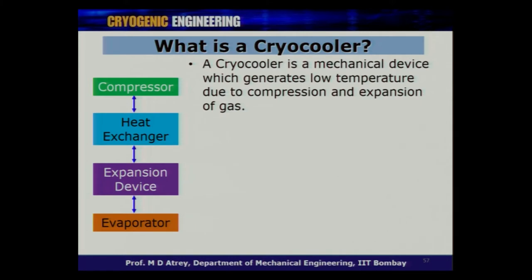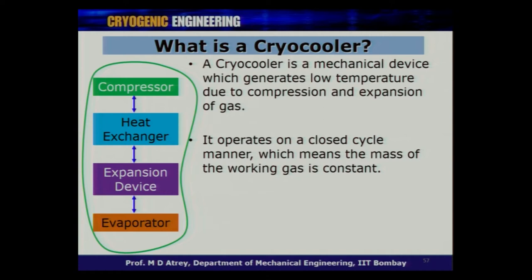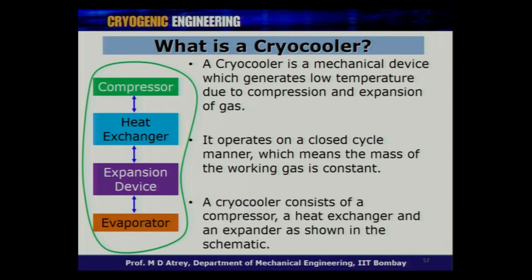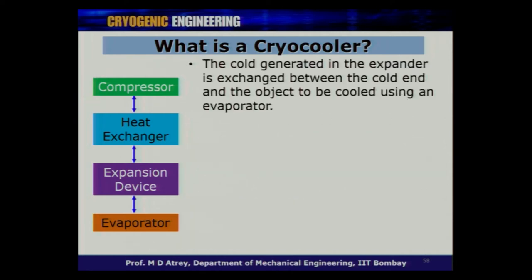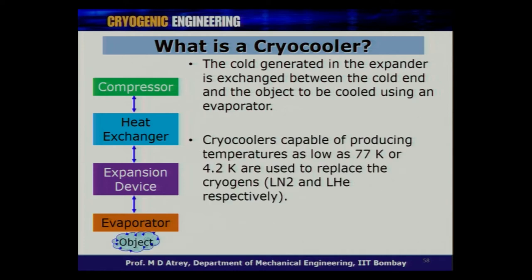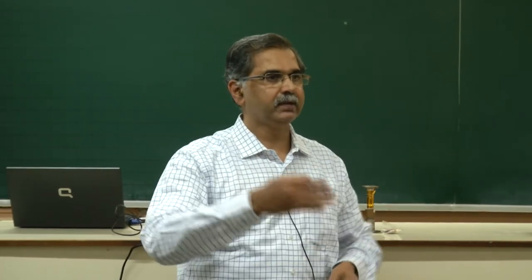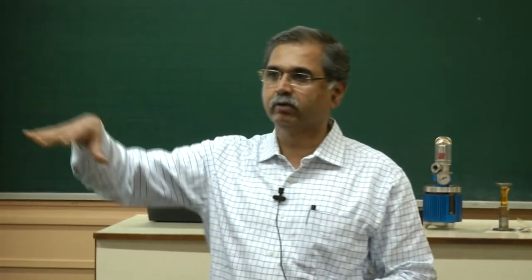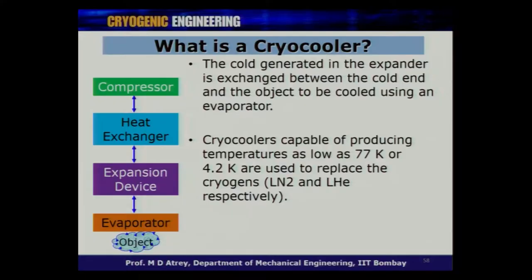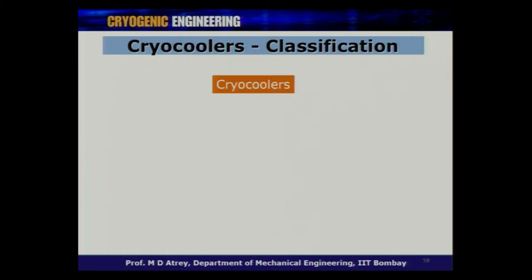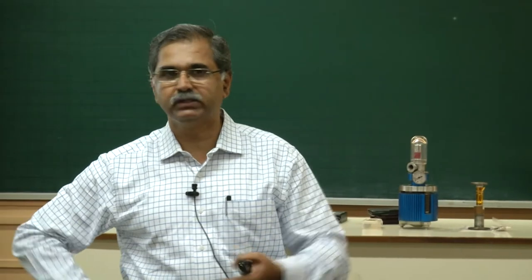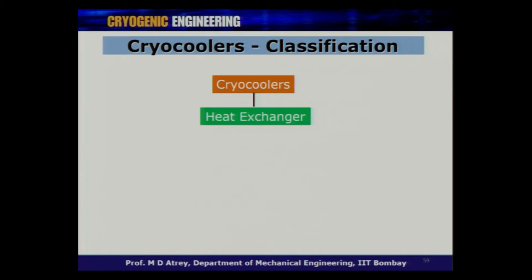In a cryocooler, electronics need to be cooled. The object to be cooled works in a closed-cycle manner, just like a domestic refrigerator. A cryocooler consists of a compressor, heat exchanger, and expander. The cold generated in the expander cools the object — which could be anything generating heat. If the electronics are not cooled, you get signal problems and a lot of noise. The object can be cooled to 80 or 90 Kelvin depending on requirements. These cryocoolers are classified based on the kind of heat exchanger they use.